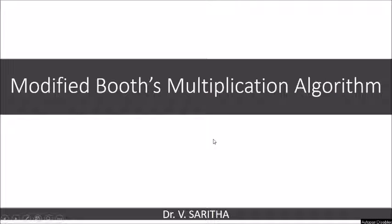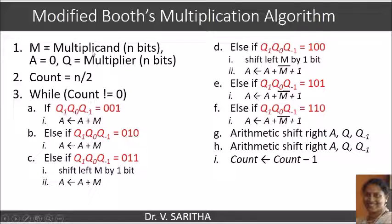In this video, I am going to present Modified Booth's Multiplication Algorithm. We are storing the multiplicand in M of n bits, A is initialized with 0, the multiplier of n bits is stored in Q, and count is initialized with n by 2.